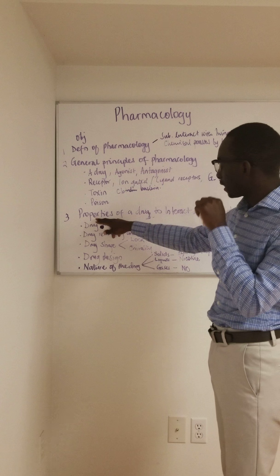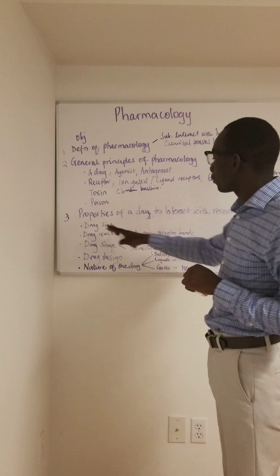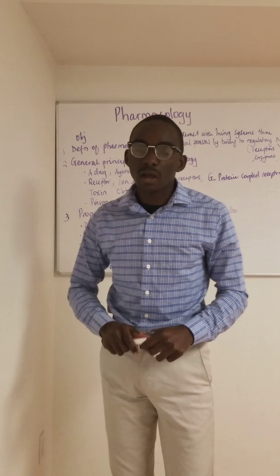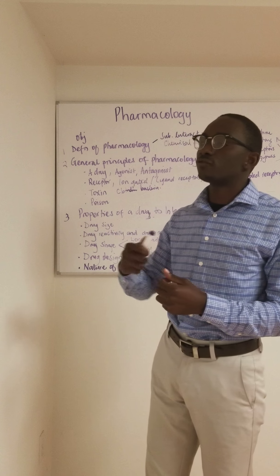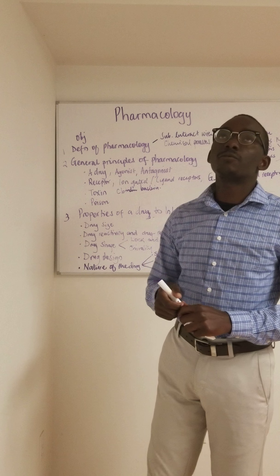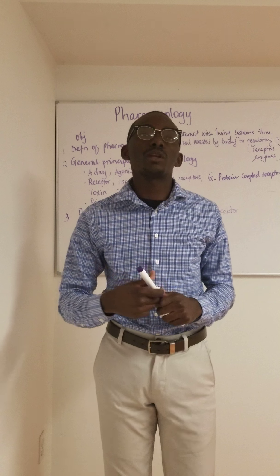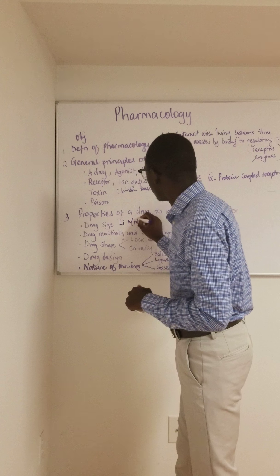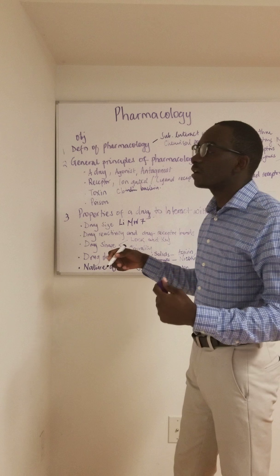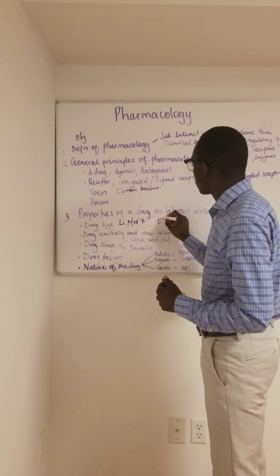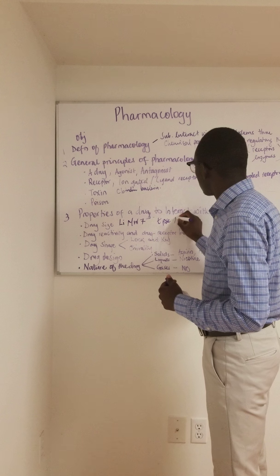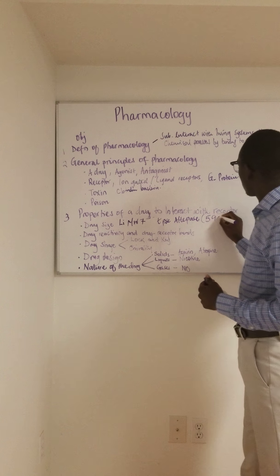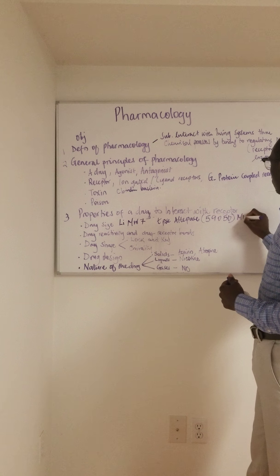Under the properties of a drug to interact with a receptor we have a number of factors. The first one is drug size. Drugs range from the lowest molecular weight of seven, which is lithium, all the way up to a drug with a very large molecular weight — such as t-PA — which has a molecular weight of 59,050 molecular weight units.